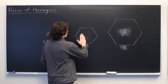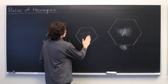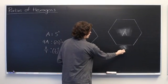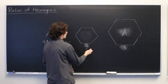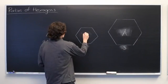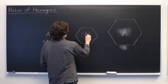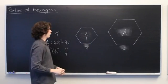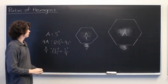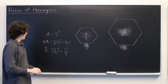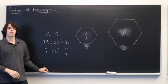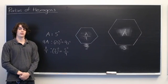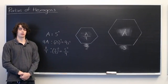So, translate that back to our hexagons. This means that if we cut the side length of a hexagon in half, the area will be reduced by a factor of 4. And there we have it. My name is Ryan Malloy, and we've just discussed areas of hexagons.